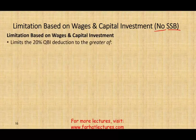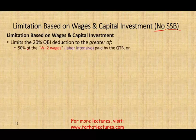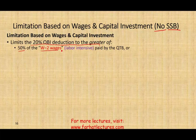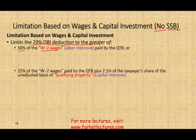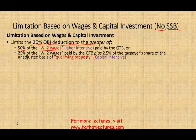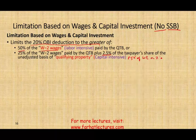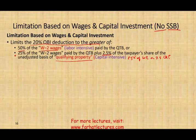Here's how the limitation based on wages and capital investment works. We're going to limit the 20% QBI to the greater of: 50% of W-2 wages — useful if you are labor intensive — or 25% of W-2 wages paid by the qualified trade or business plus 2.5% of the taxpayer's share of unadjusted basis of qualified property. The second formula gives a higher deduction if you have more qualified property.